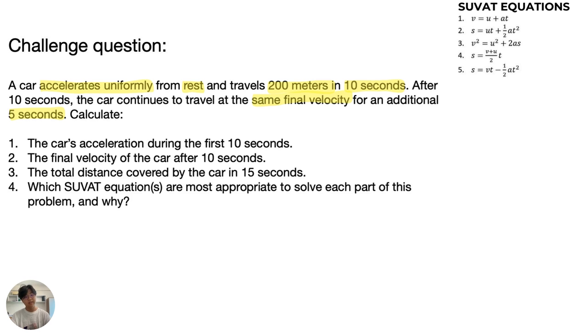Now it states that the car accelerates uniformly from rest. Accelerating uniformly means it's a constant acceleration, and starting from rest means the initial velocity should be zero. It travels 200 meters, so our displacement is 200 meters, and time is 10 seconds. That's the first part of the question. You can see that this question is actually split into two different parts: the first 10 seconds and the next five seconds.